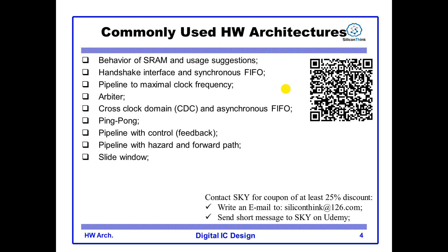Then I will explain many commonly used hardware architectures in part 3. For example, the SRAM, the synchronizer FIFO, handshake interface, pipeline architecture, arbiters, and clock domain crossing. This part may be the most confusing part for beginners, so I will explain it in detail and give you many examples.